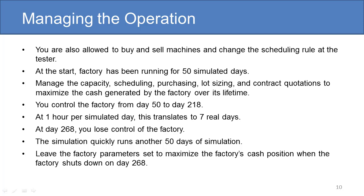You will have control of the factory from day 50 to day 218. At one hour per simulated day, this translates to seven real days. At day 268, you will lose control of the factory, and the simulation will quickly run another 50 days of simulation. When you lose control of the factory, management expects you to leave the factory parameters set to maximize the factory's cash position when the factory shuts down on day 268.